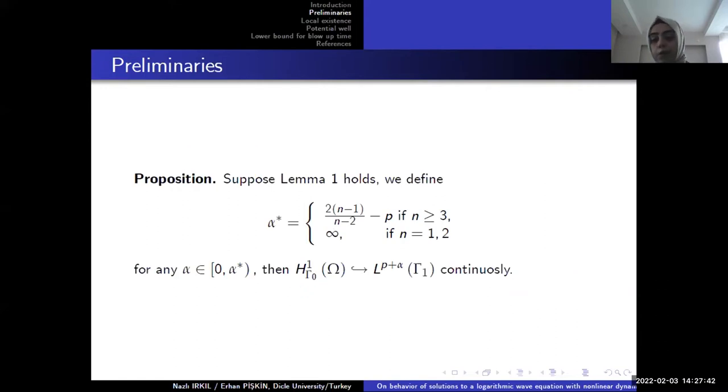The other proposition is related with the logarithmic source term. Because we have logarithmic source term, we couldn't use the trace-Sobolev embedding directly. So we must have some conditions for this. And in this proposition, we give some conditions for this lemma.